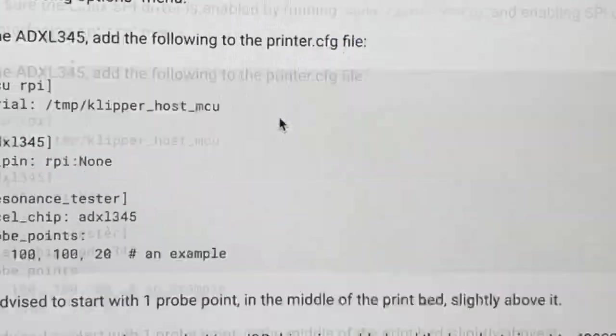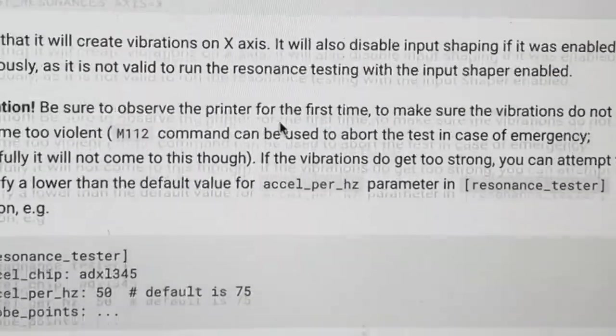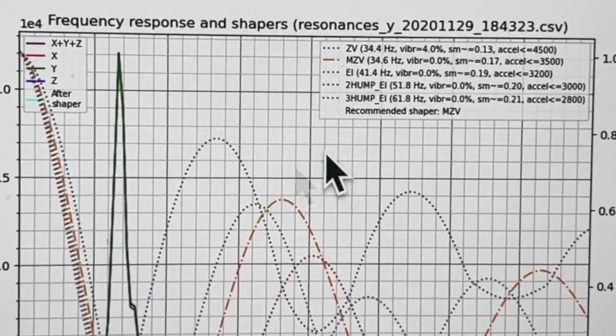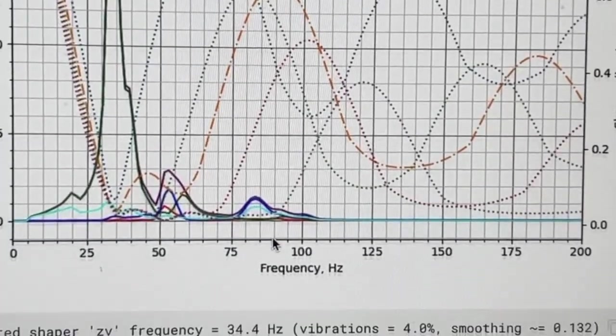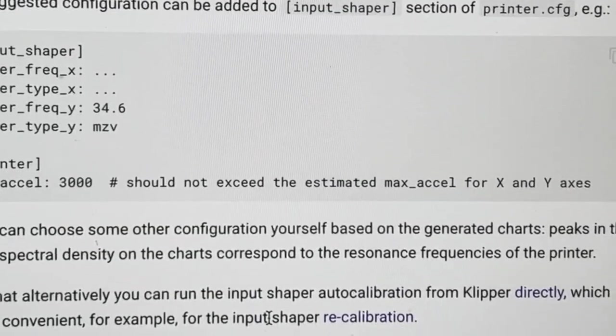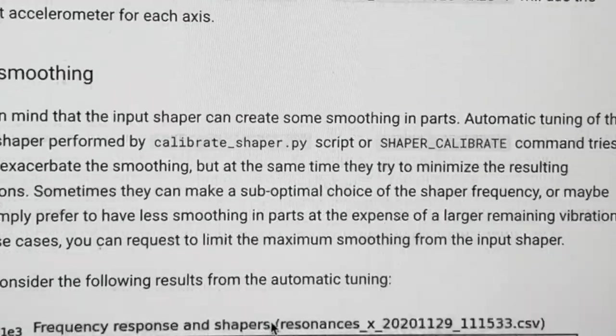So something to keep in mind when you're selecting input shaper values and my understanding is when you do the automated way with the ADXL 345 it's going to pick some kind of a happy medium between the two and you can learn more about that on the measuring resonances pages which does talk about the ADXL 345 as well and it walks through a little bit of that but that's a lot to deep dive into. It also gives you some example graphs and charts and things and how it talks about how to interpret them.